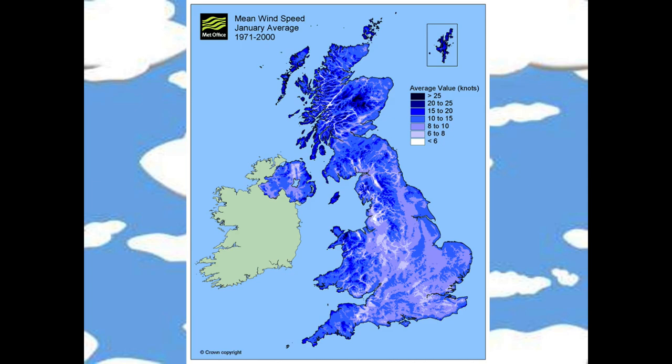Wind is associated with low pressure — when air rises it needs to be replaced, so wind flows in. The UK is a low pressure area because that's where the polar and Ferrel cells meet. Wind speed also relates to altitude in a very simple way: the higher up you go, the fewer obstacles slowing the wind down. You can see Dartmoor, the Lake District, and the Pennines all picked out on the wind speed map.